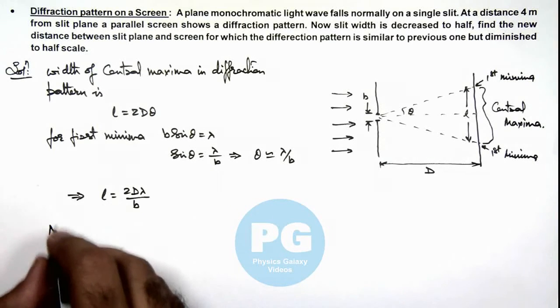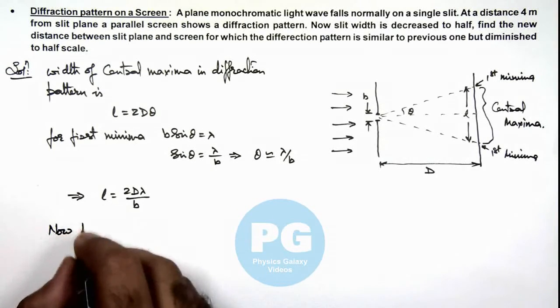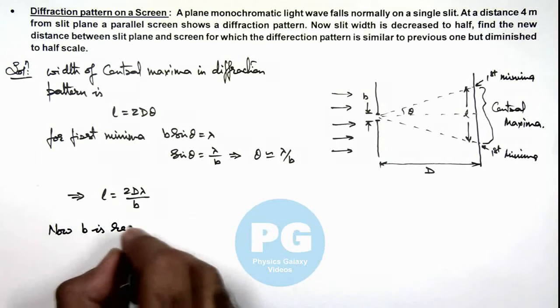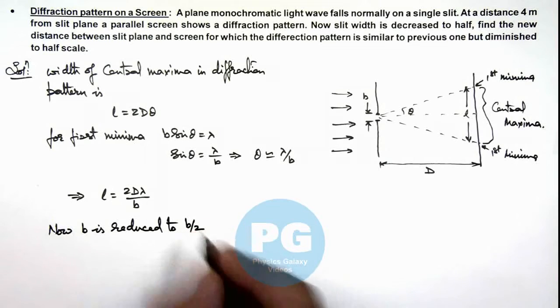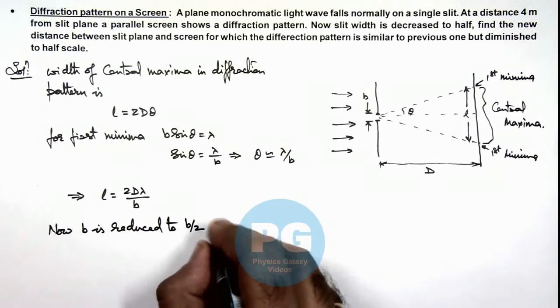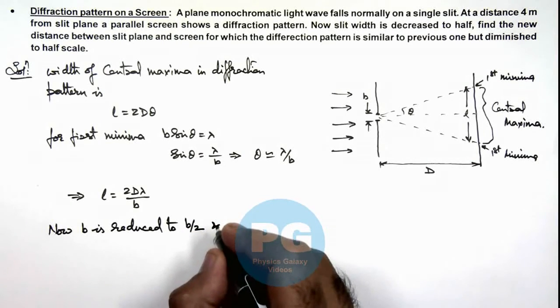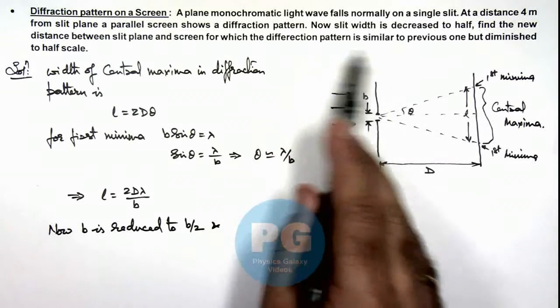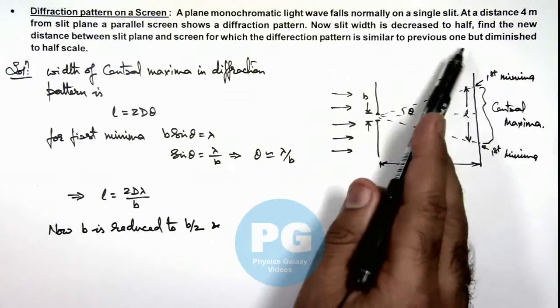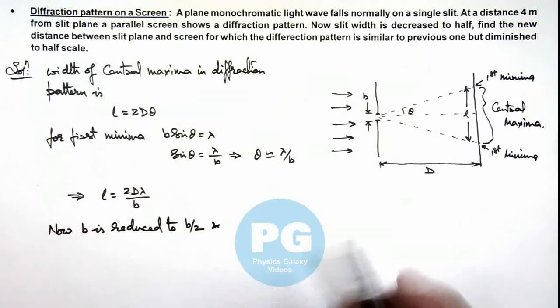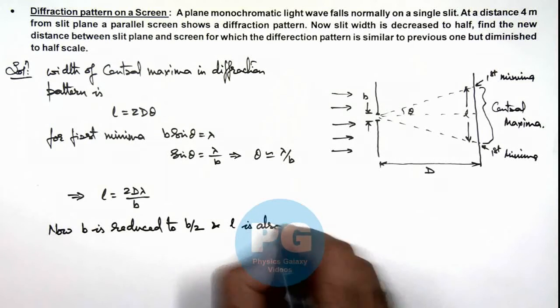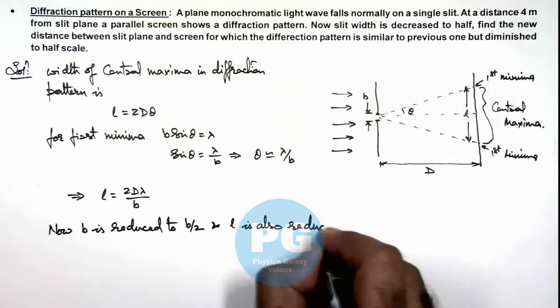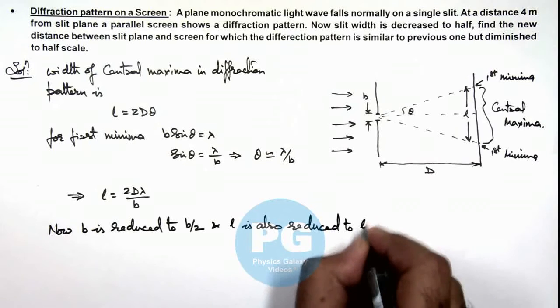And now it is saying b is reduced to half, that is b by 2. And it is also saying that l should also be reduced to half, as it is saying the diffraction pattern is similar to the previous one but diminished to half scale. And l is also reduced to l by 2.